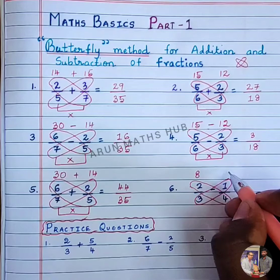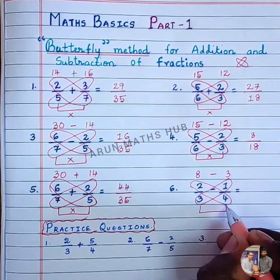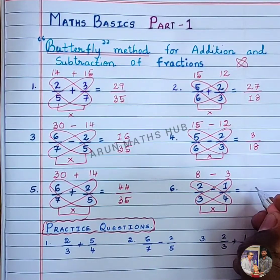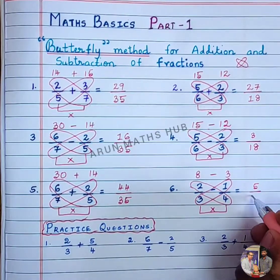For the denominator, we need to multiply. 3 times 4 is 12. 8 minus 3 is 5, divided by 3 times 4, which is 12.